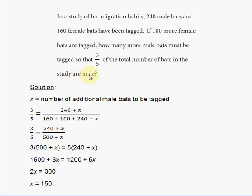So X equals 150 — 150 additional male bats must be tagged in order for three-fifths of the total number of bats in the study to be male.